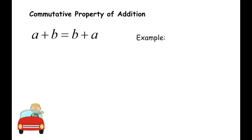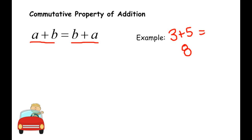The commutative property of addition — technically it is A plus B equals B plus A. I always give the example of the word commute. Commute means to move; you might hear your dad or mom say they have a commute to work, driving from Overland Park to downtown. That's why there's a little car icon — commute means to move. So 3 plus 5 equals 8, and 5 plus 3 also equals 8. You can move those numbers and still get the same answer.